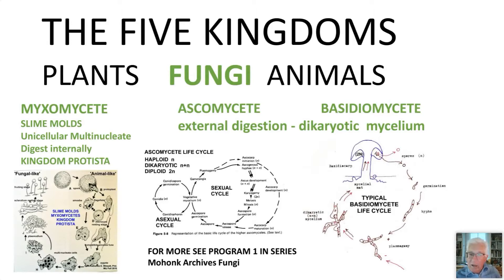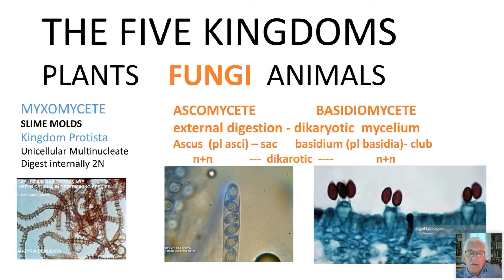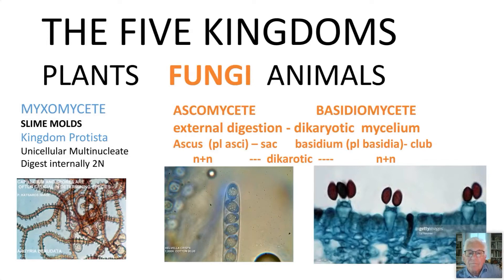This diagram shows what the spore-bearing structures look like. That's an ascus — plural asci — a sausage-shaped structure. Over here is a basidium, a club shape. You can see how the spores are arranged: typically eight in the ascus and four on the basidium, although not always. In a slime mold, spores are just formed here and there throughout the organism. So that makes it really difficult to identify mushrooms.